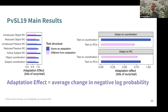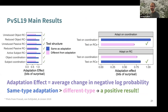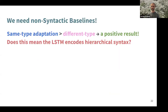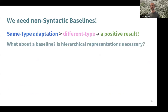Here are their results. The adaptation effect is the change in negative log probability. They want the blue bars to be bigger than the pink bars — the same-type adaptation effect greater than the different-type effect. They don't specify how big the bar should be, just that relatively blue should be bigger than pink. That is true and statistically significantly so for every sentence type. They concluded a positive result. But does this really mean the LSTM has encoded hierarchical syntax? My issue was that they had no baseline — what would a model that we know doesn't have hierarchical representations do?